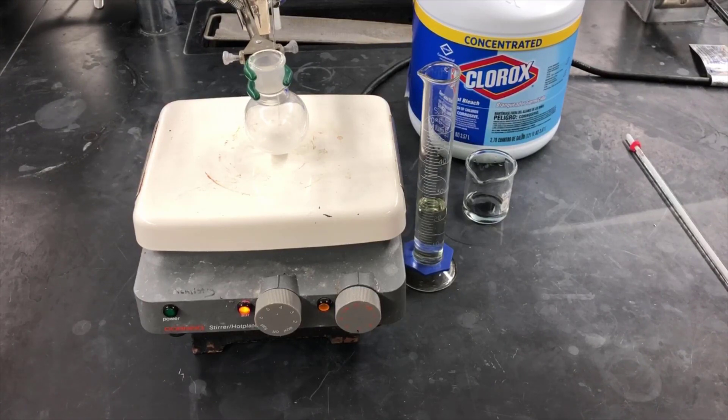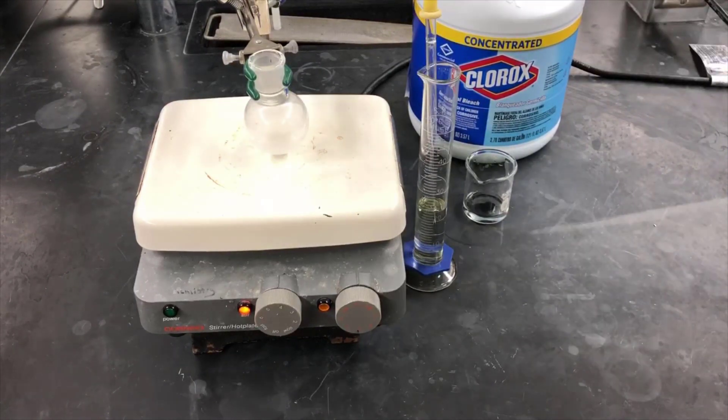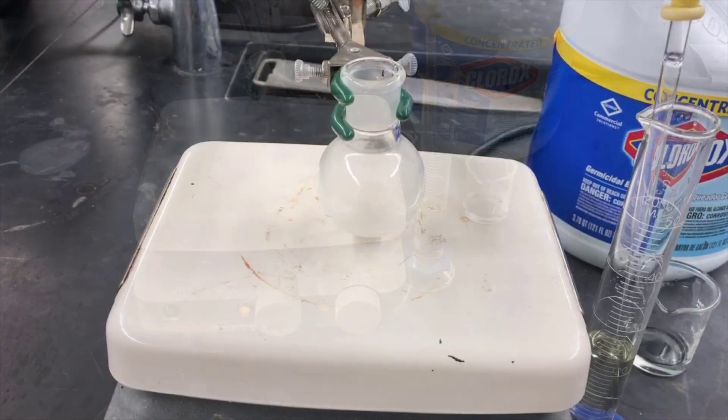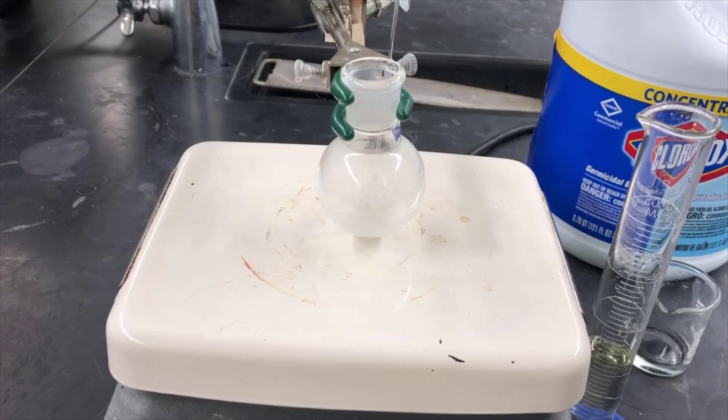You'll notice I'm checking the temperature of the solution every so often here. We want to keep the temperature of the reaction below about 50 degrees. The reaction is fairly exothermic, especially in the early stages when you're adding the first few milliliters of bleach.